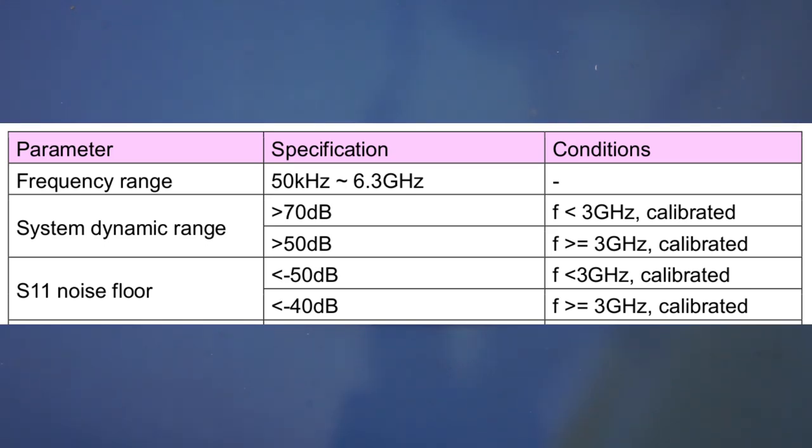Interestingly though, the spec did not say whether the system dynamic range is for S11 or for S21. It could be that the figures for both S11 and S21 are the same, as the Light VNA uses only one mixer and the signals are routed via RF switches depending on whether S11 or S21 is being measured.